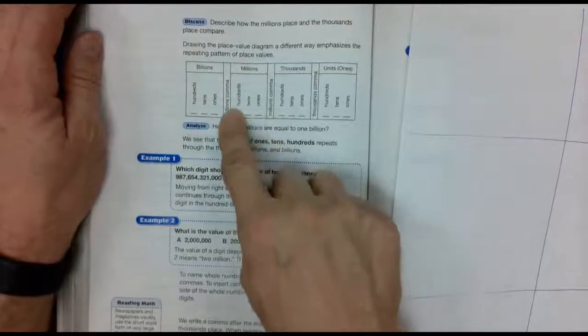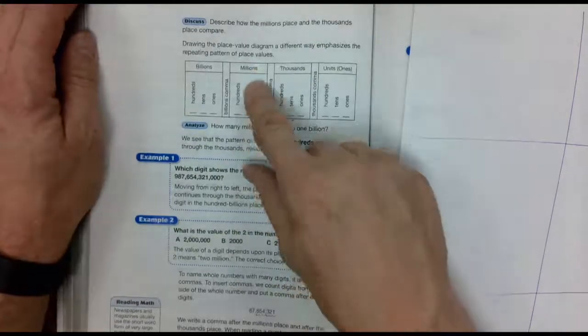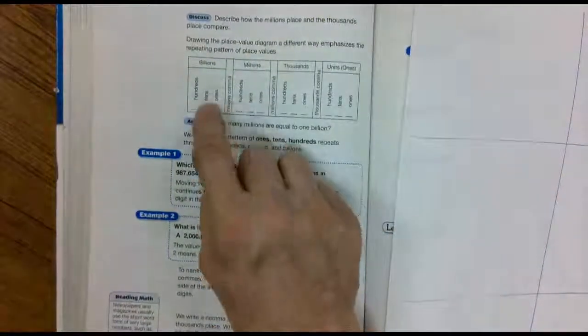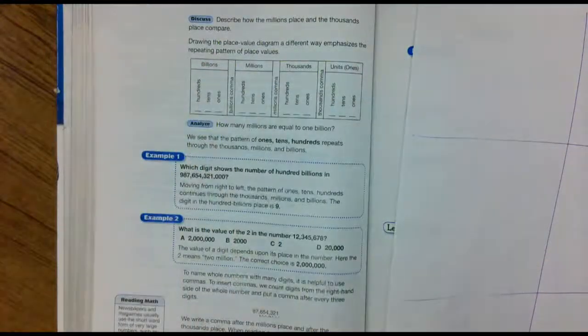Millions, same thing. Ones, tens, hundreds. One million, ten million, hundred million. Billions are the same. Ones, tens, hundreds. One billion, ten billion, hundred billion.